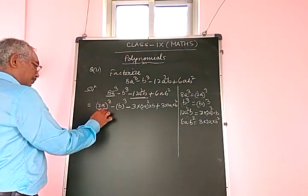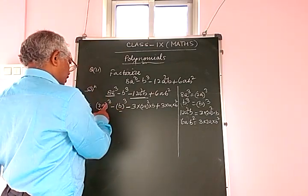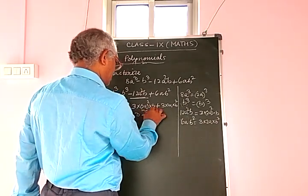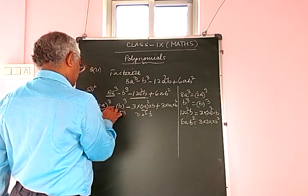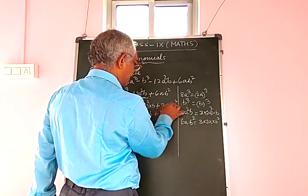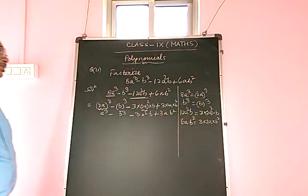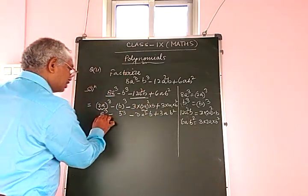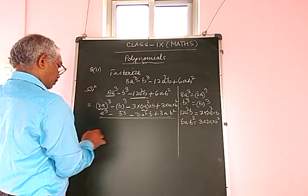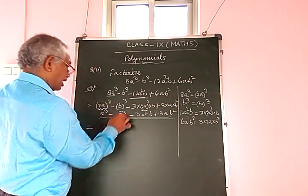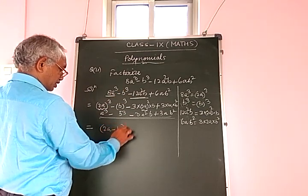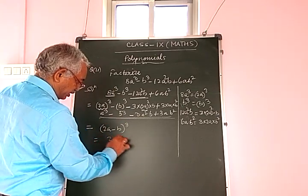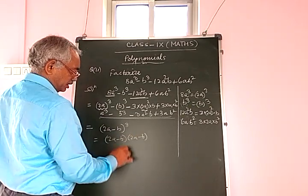Let 2a = A and b = B. This matches the form A³ - B³ - 3A²B + 3AB², which equals (A - B)³. Substituting back, the factorized form is (2a - b)³ = (2a - b)(2a - b)(2a - b).